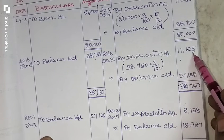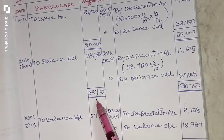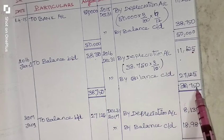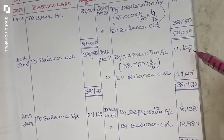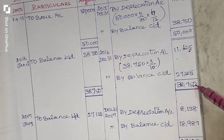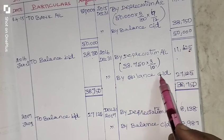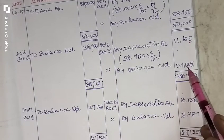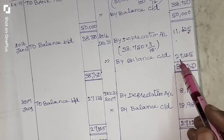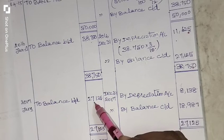Enter the second year depreciation value of Rs. 11,625. The debit side has the higher value, so Rs. 38,750 is the total on both sides. Subtracting Rs. 11,625 from Rs. 38,750 gives Rs. 27,125. This is the closing balance of the machinery account — 'By Balance c/d' — for the year ended 31st December 2016.